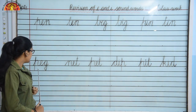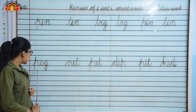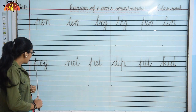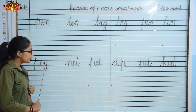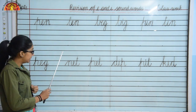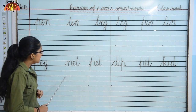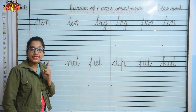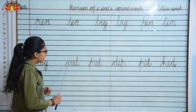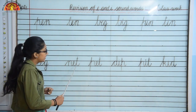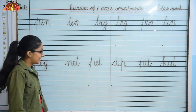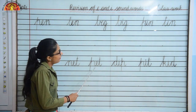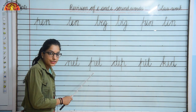Now look here everyone. P, E, G — Peg. P, E, G — Peg. Next one is N, E, T — Net. Now one more: P, E, T — Pet.